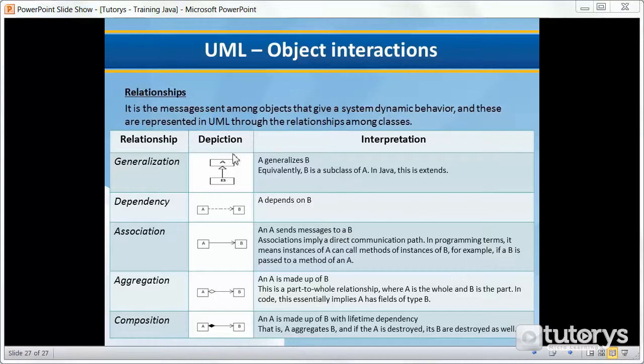Let's look at the first relationship here. Generalization, which is depicted by this image here. A generalizes B. This basically means that B is a subclass of A. In Java terms, this is known as extends. This is the only relationship that we've actually seen up until now in Java terms. This is what it looks like in UML terms.